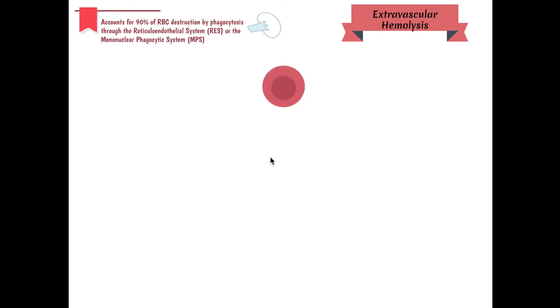We're going to discuss extravascular hemolysis first. Extravascular hemolysis accounts for 90% of RBC destruction by phagocytosis through the reticuloendothelial system, or RES — also called the mononuclear phagocytic system. This happens in your spleen.